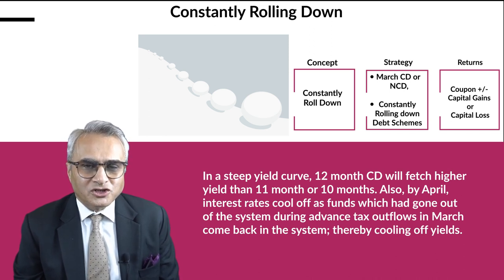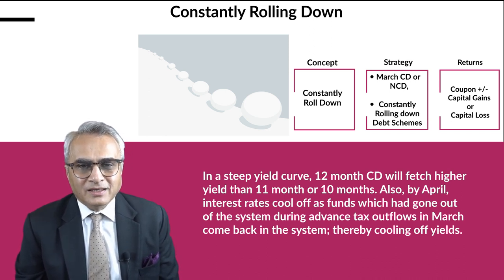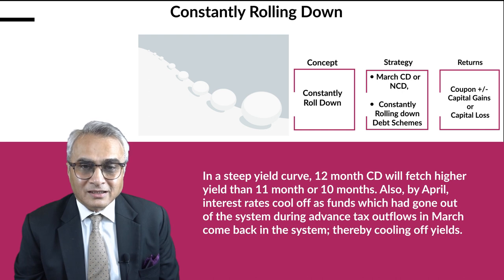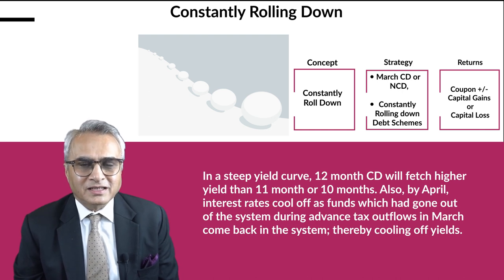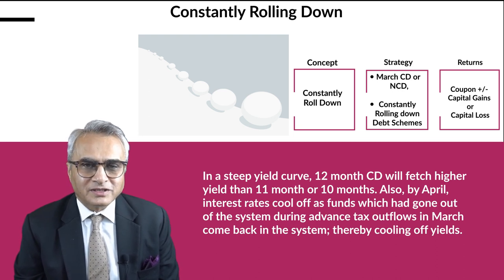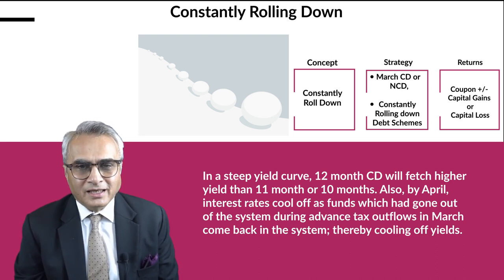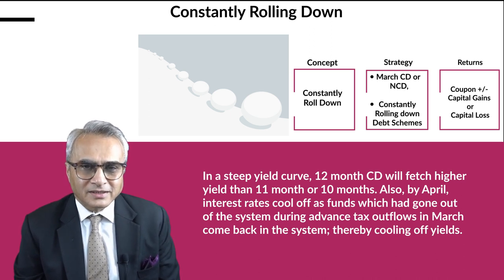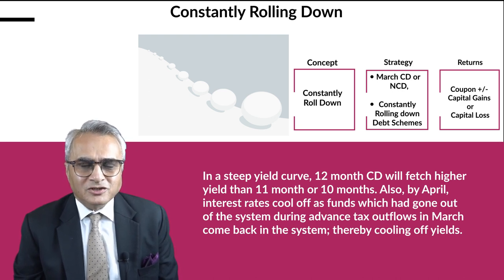Investors have a choice to exit out of this scheme with higher accruals and some capital gains. For example, if the fund manager had captured 10% yield in March, it could have automatically come down to 9.5% in April or May because of liquidity returning to the system and it being a lean credit season.